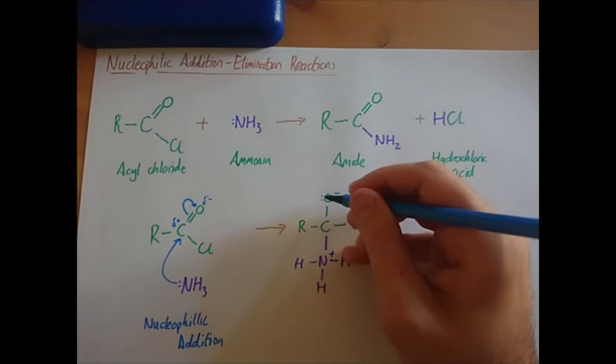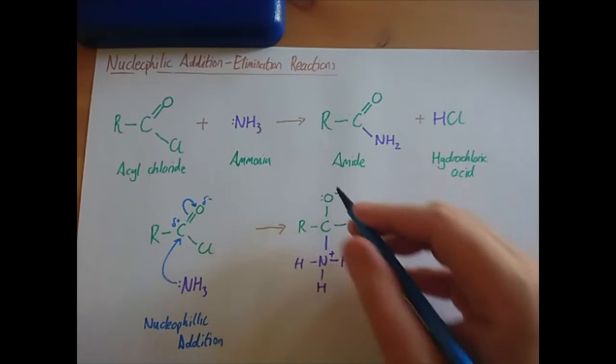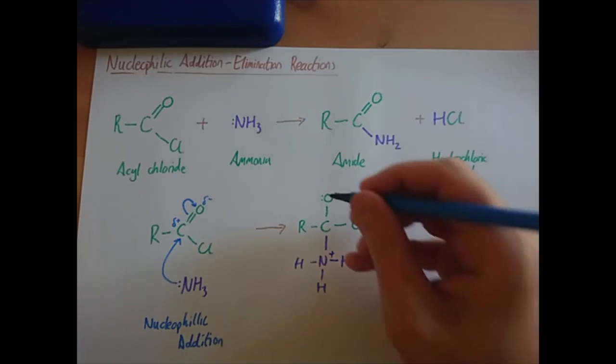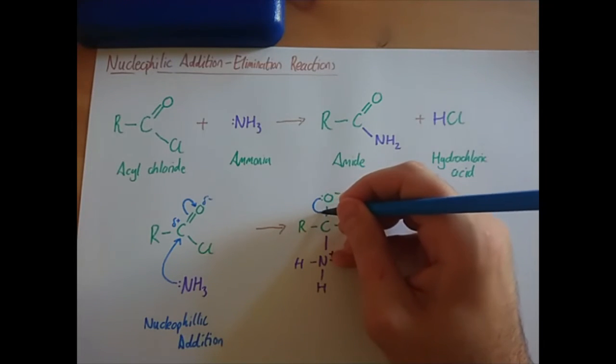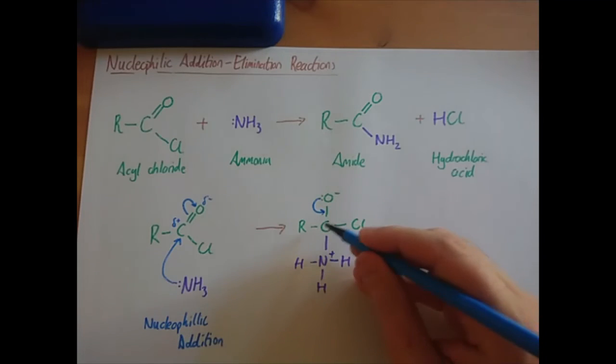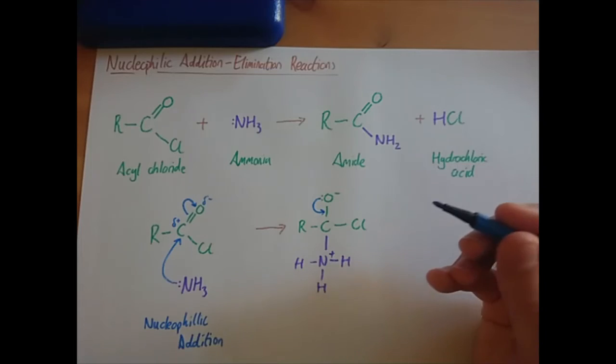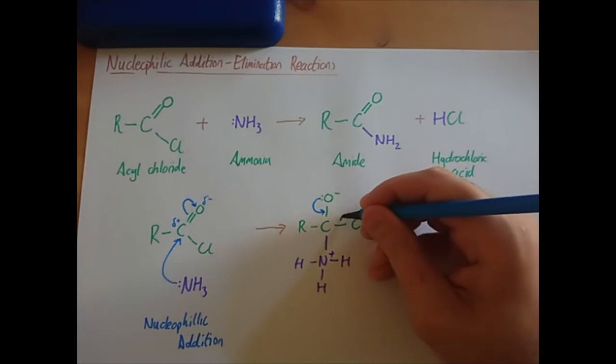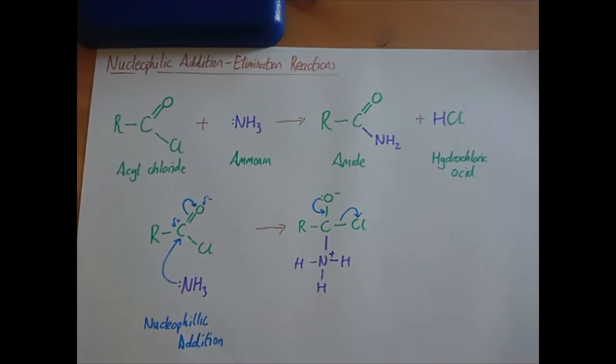The electrons that have been passed onto the oxygen actually return to the bond between the carbon and oxygen, which then becomes a double bond. So you break that bond in the first stage, in the second stage you reform it. That means this carbon has too many bonds again, so it wants to break something else. So what's it going to break? We're going to remove the chlorine.